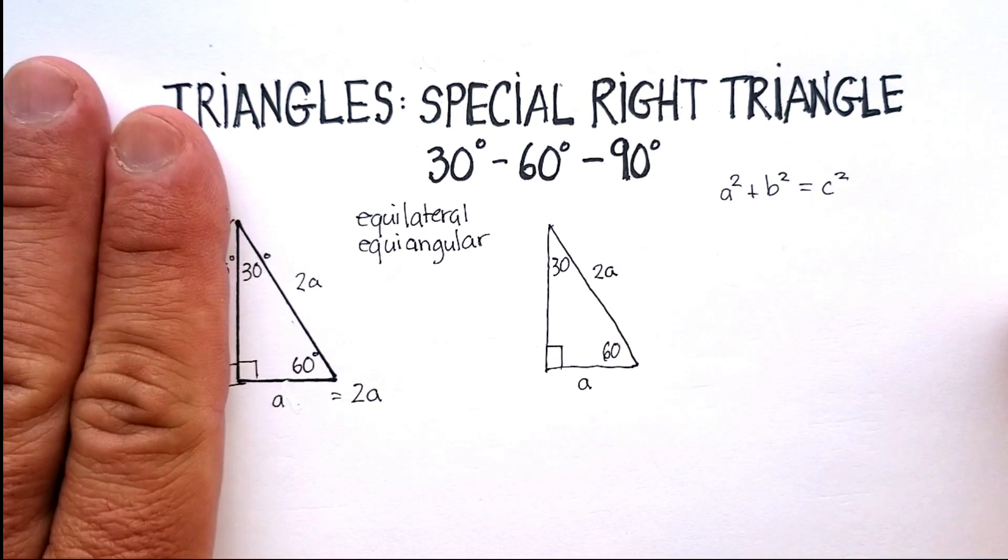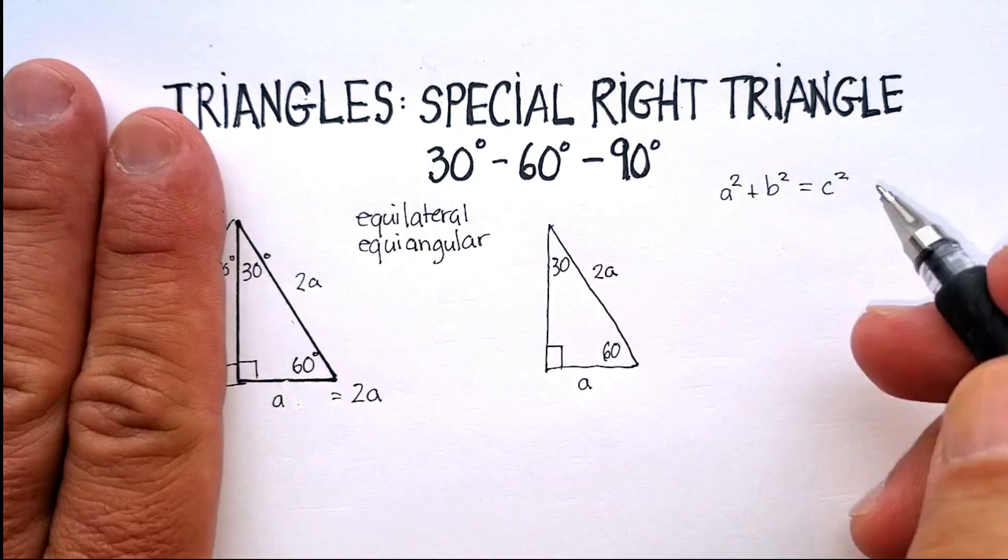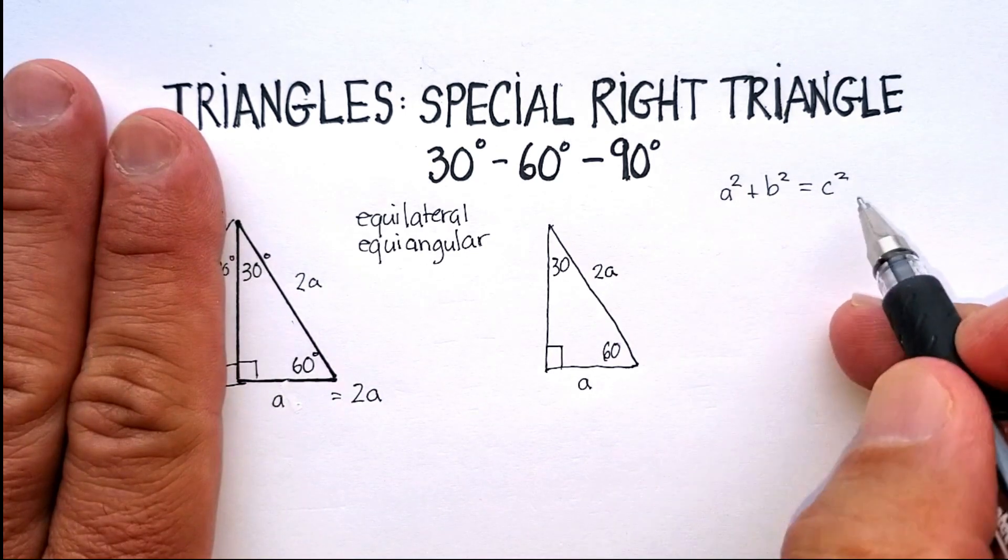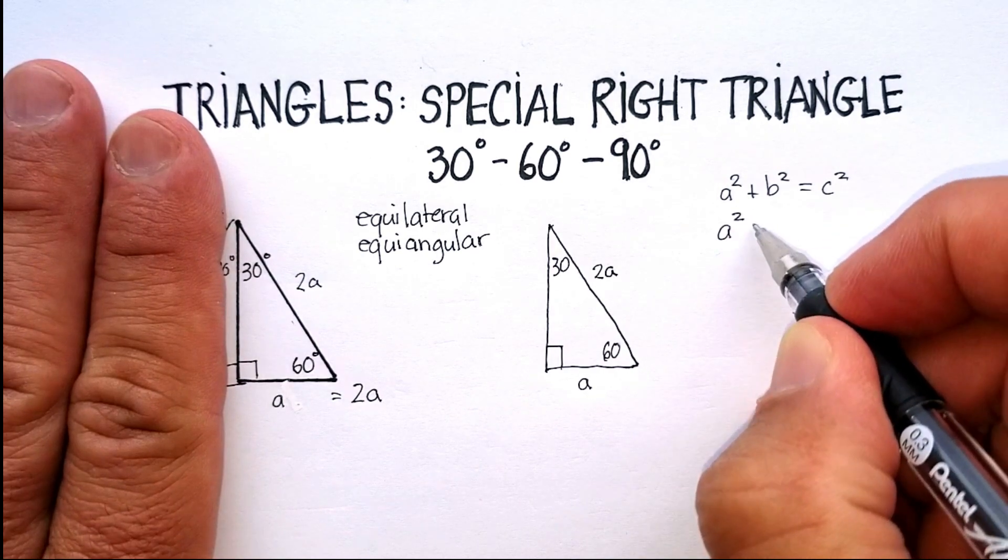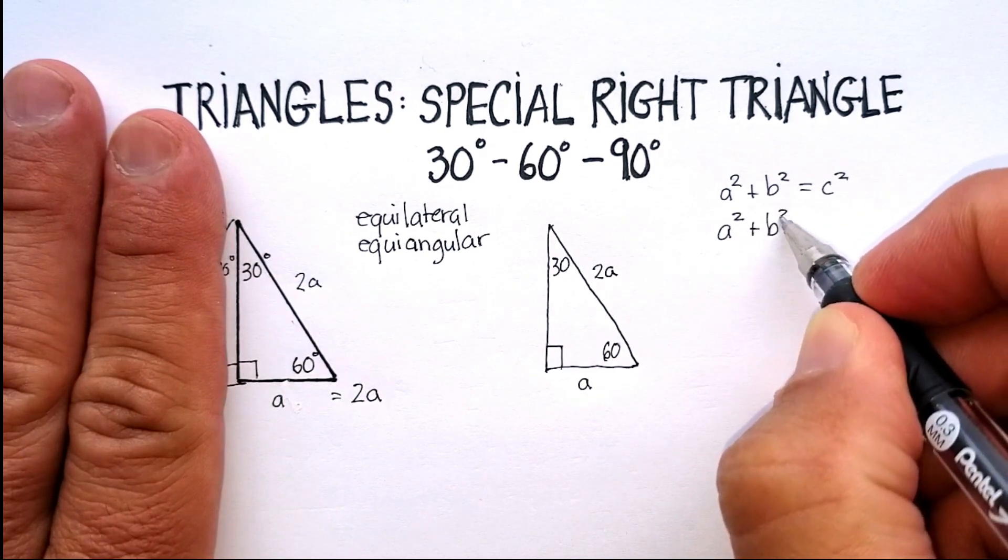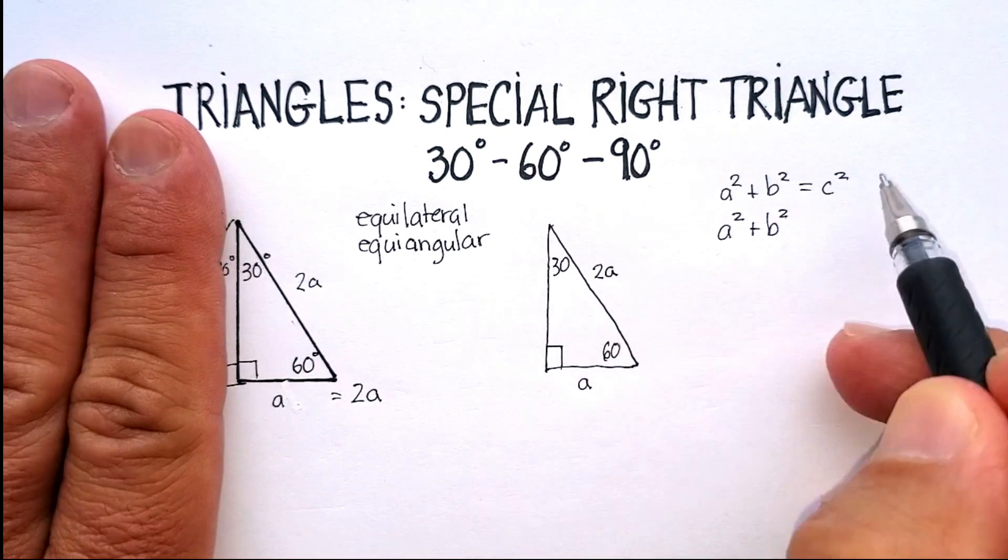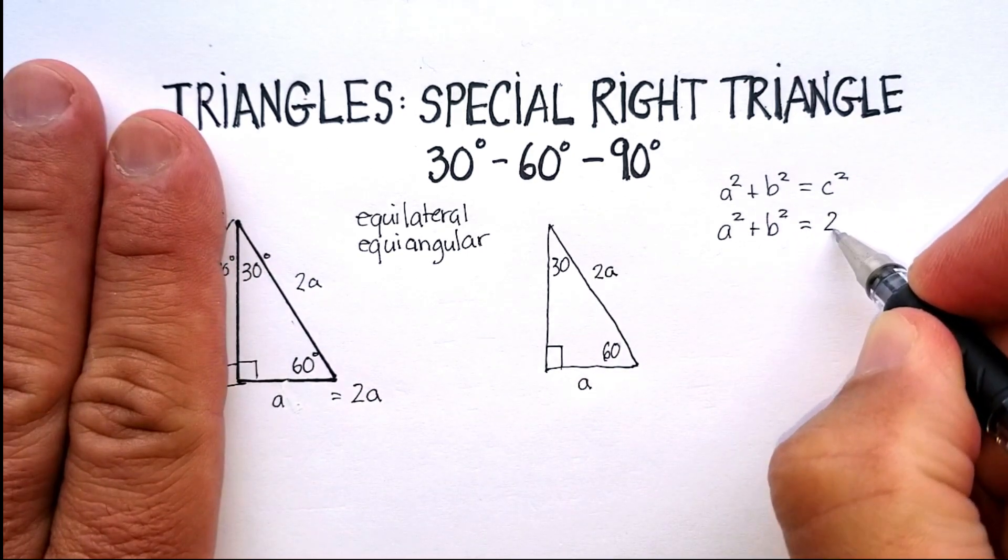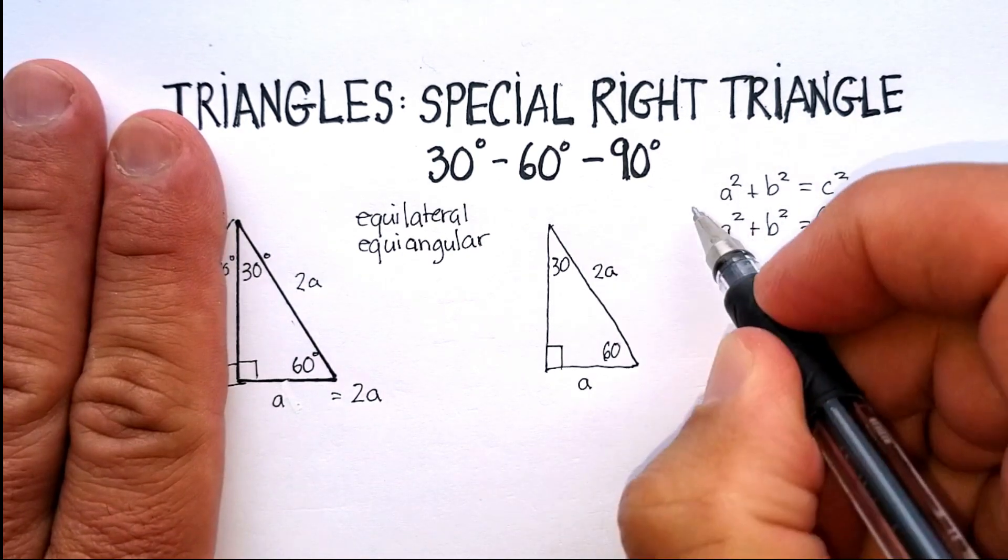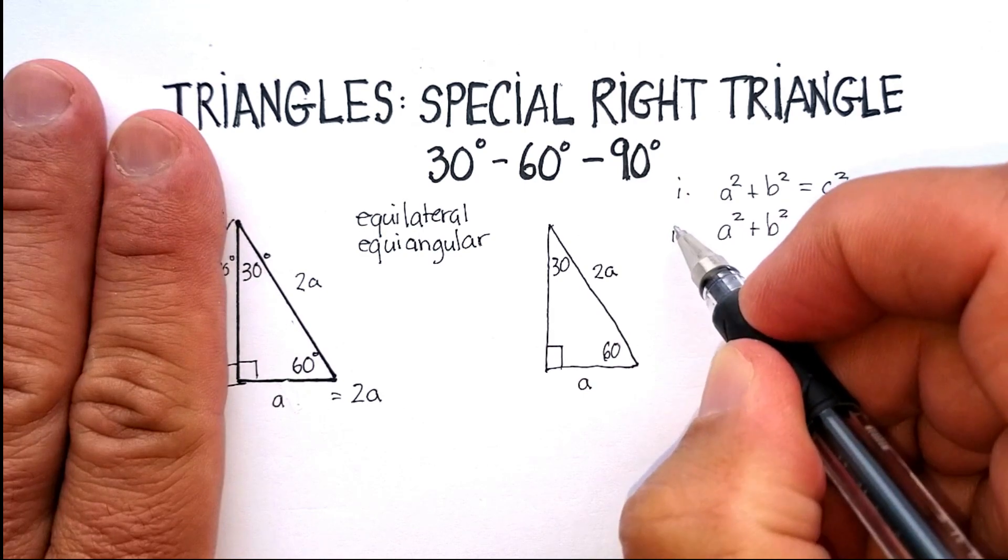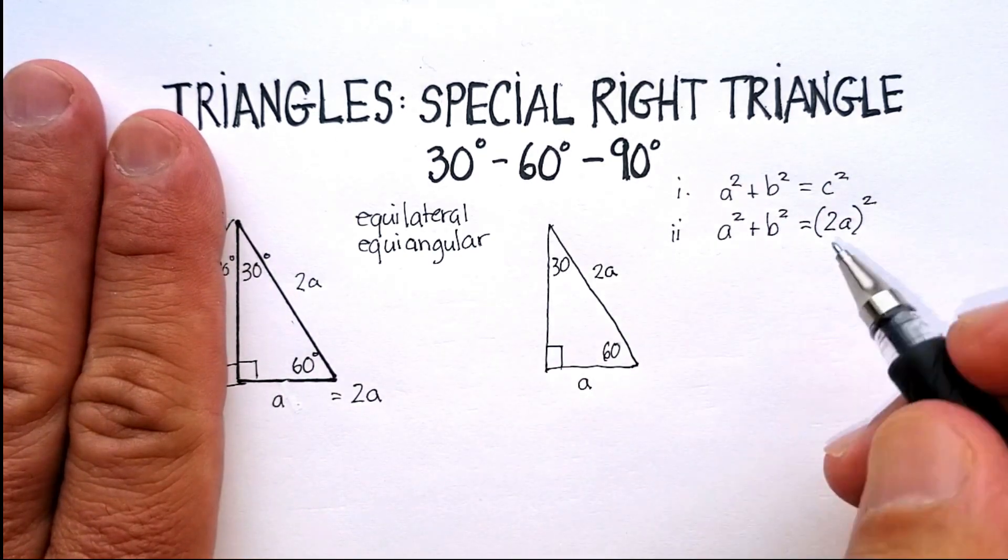Which is actually kind of helpful to us, isn't it? So I'm going to go back up here, and I'm going to put in A squared plus B squared. But instead of C, I'm going to put in 2A quantity squared. And let's figure out what that's equal to. We're going to solve for B, and then we're going to see how that works.